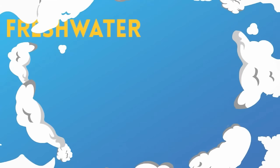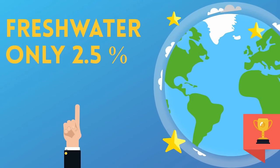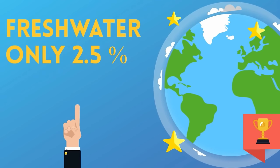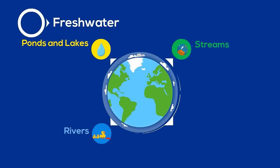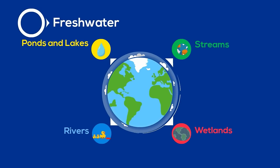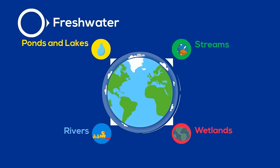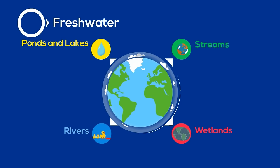The Earth has lots of water but only 2.5% is freshwater. The major freshwater biomes include ponds, lakes, streams, rivers, and wetlands. Plants and animals in these freshwater biomes are adapted to the low salt content in freshwater and are unable to survive in areas of high salt concentration.